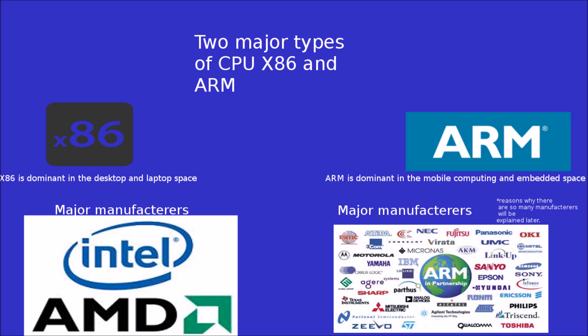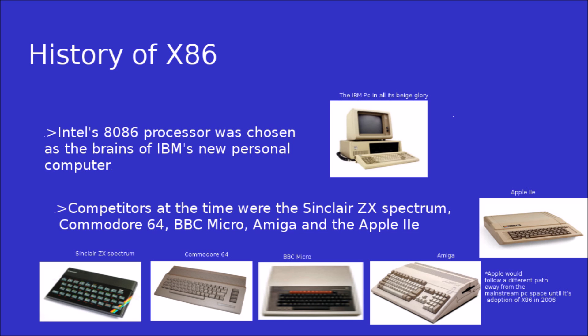In the consumer space there are two major types of processor: the x86, which is primarily in laptops and desktops, and ARM, primarily in mobile devices and embedded systems. The big question is: will ARM transition to the desktop after dominating the mobile and embedded space, and displace the current king, x86?